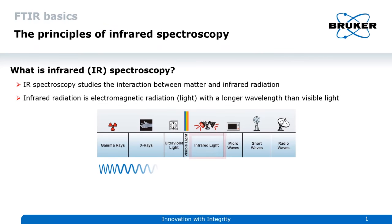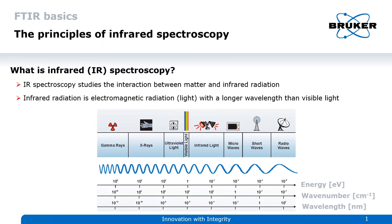A longer wavelength means the light carries less energy. A longer wavelength also means a smaller wavenumber. Since infrared spectra are mostly labeled in wavenumbers, wavenumber is a term frequently used throughout this tutorial.